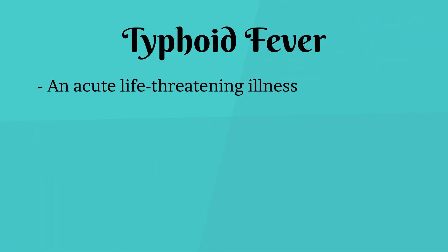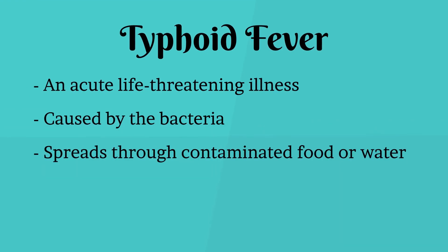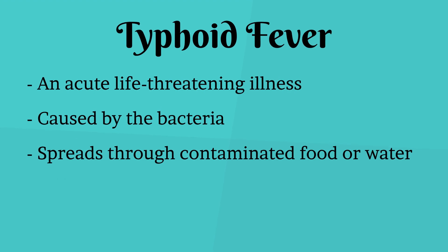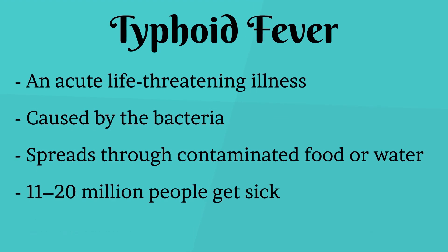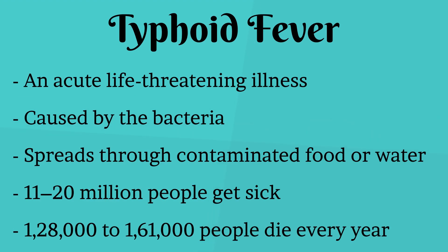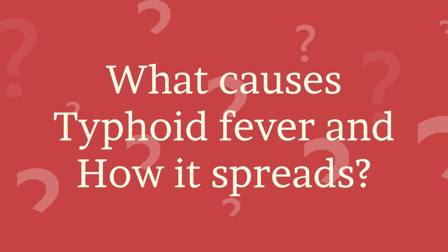Typhoid fever is an acute, life-threatening illness caused by bacteria. It usually spreads through contaminated food or water. An estimated 11 to 20 million people get sick from typhoid and between 128,000 to 161,000 people die from it every year. Typhoid risk is higher in populations that lack access to safe water and adequate sanitation. Poor communities and vulnerable groups including children are at highest risk.